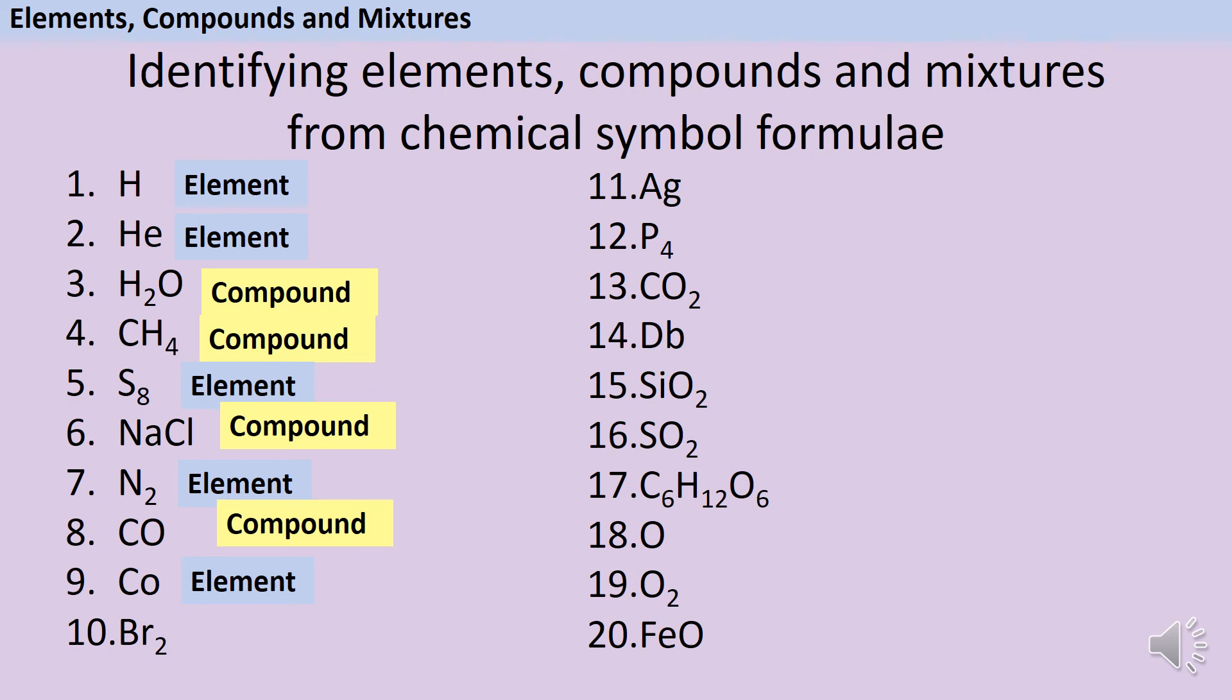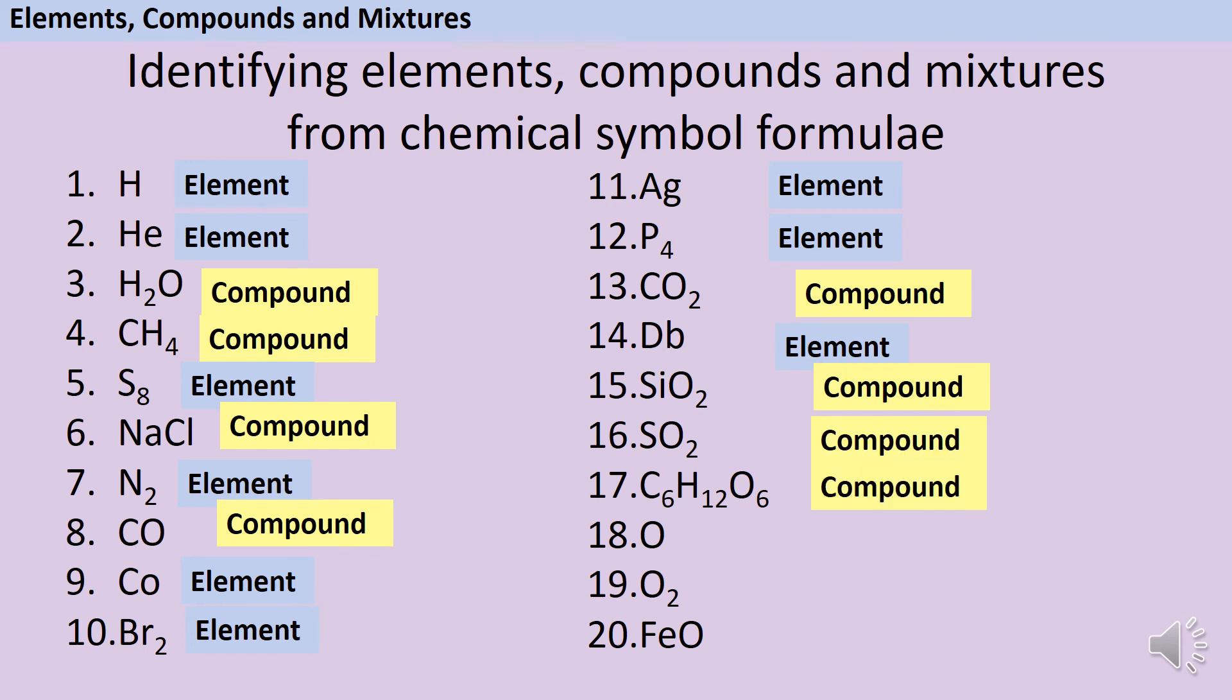Number 10 is bromine, which is also an element. Number 11 is silver, still an element. And number 12 is phosphorus, still an element. Number 13 is carbon dioxide, which is a compound, because we've got two different capital letters. Then we've got element, compound, compound, compound.